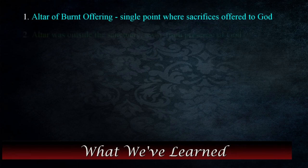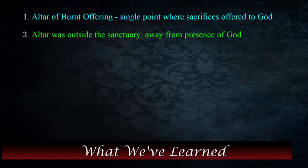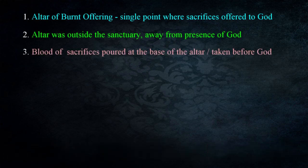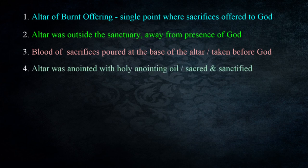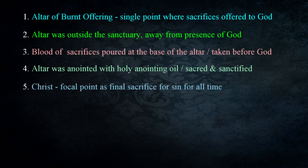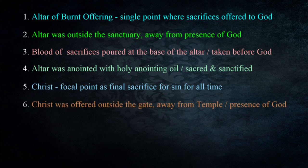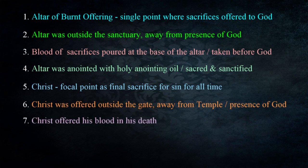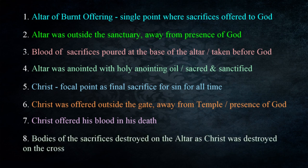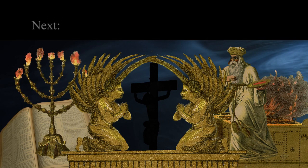Christ became the focal point at which God removed the sins of the faithful who lived prior to Christ, and will remove sin from the life of believers until the end of time as they come to the Lord in faith and obedience. The altar of burnt offering was the single point where the sacrifices were offered to God — outside the sanctuary, away from the most holy place. The blood of the sacrifices was poured at the base of the altar and carried before God in the most holy place on the Day of Atonement. The bodies of the sacrifices were destroyed on the altar, just as the body of Christ was destroyed and killed on the cross.